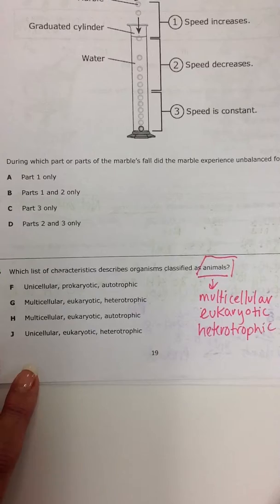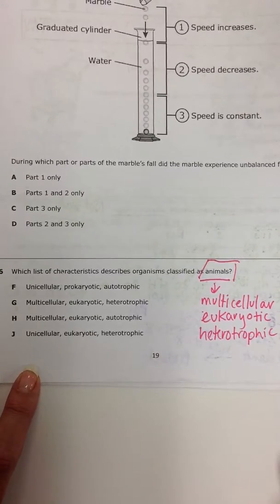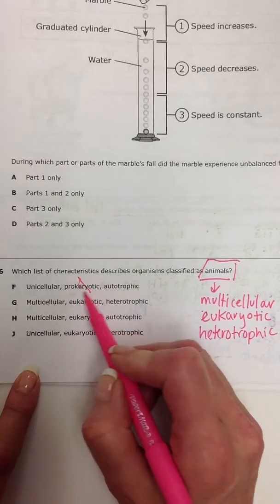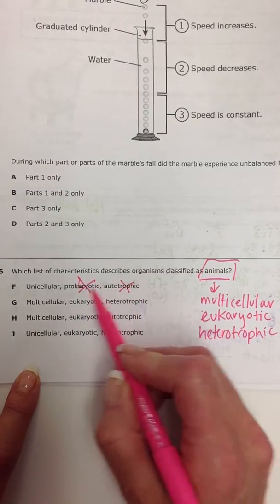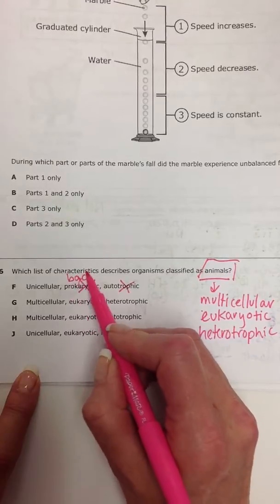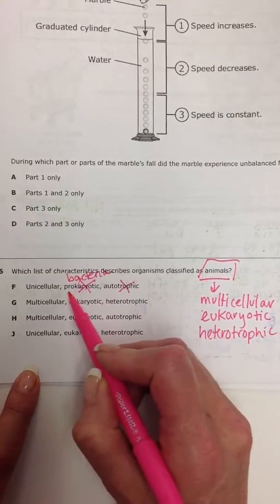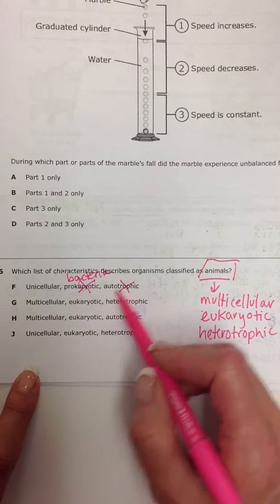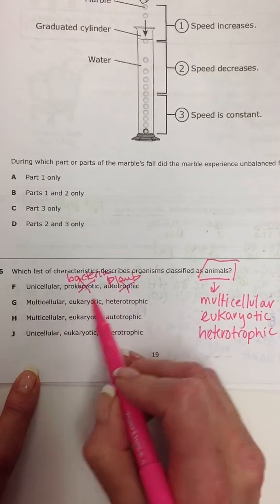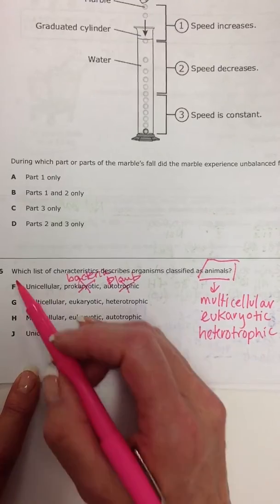All right, let's see if we can match our choices up with something here on the list. So unicellular, prokaryotic, not, autotrophic, not. Prokaryotic would be like bacteria, means it does not have a nucleus in its cell. Autotrophic are plants. So neither one of those goes with animals.